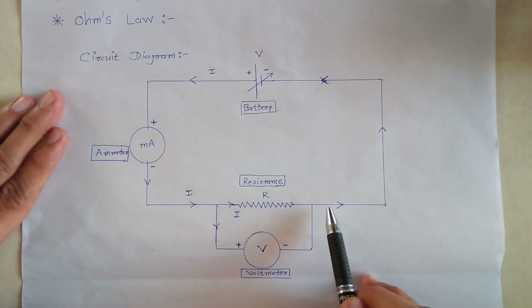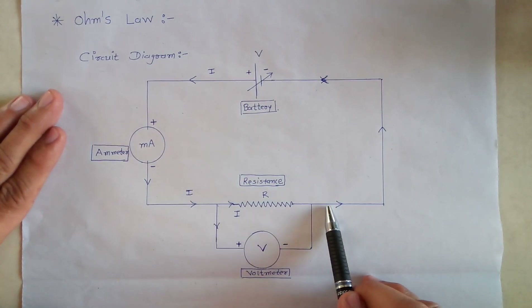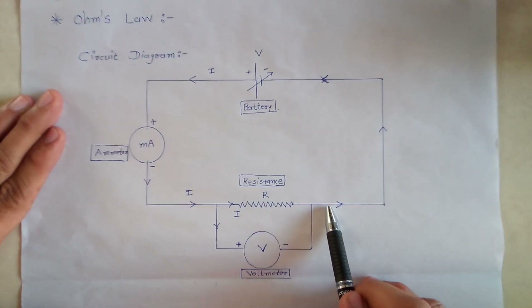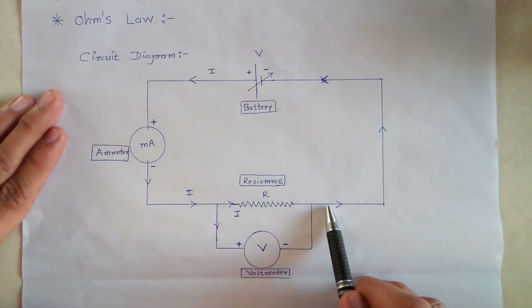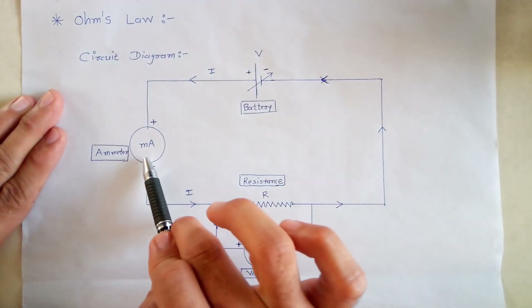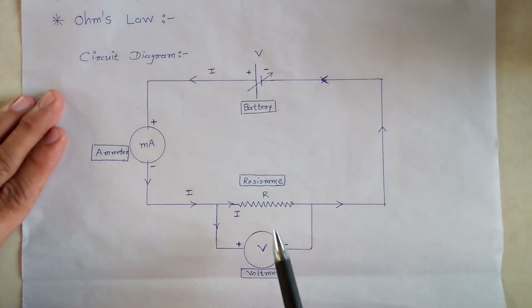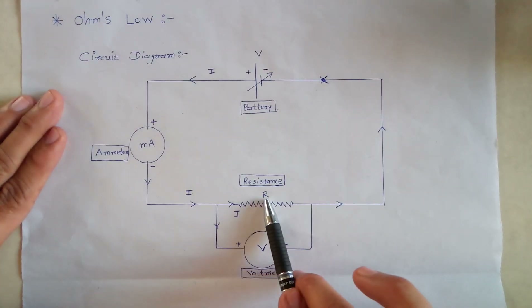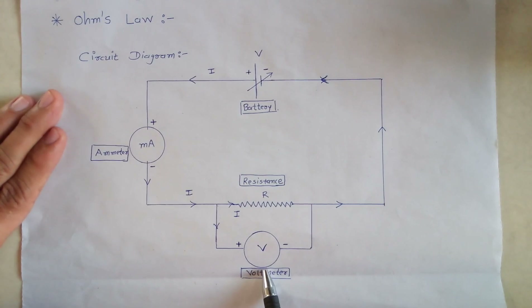From this diagram, we will construct the practical circuit using a battery, milliammeter, unknown resistance, and voltmeter.